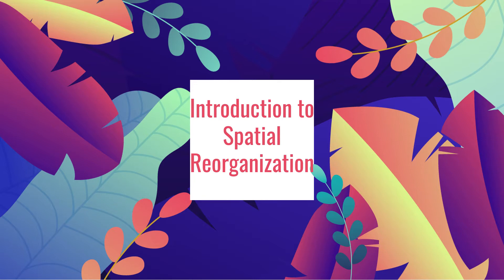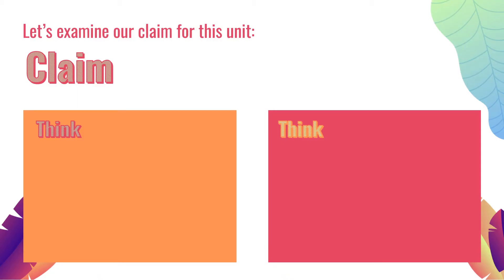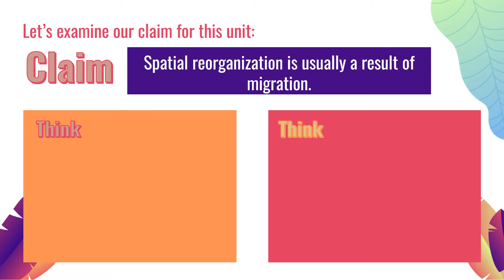We are starting a new unit today — say goodbye to regionalization. We are now in the unit called spatial reorganization. This lesson is just your introduction. Let's start by examining the claim for this unit. We will have a writing assessment at the end, and I think we're going to move forward from just writing a thesis to writing mini essays — probably three paragraphs. Our claim this unit is: spatial reorganization is usually a result of migration.